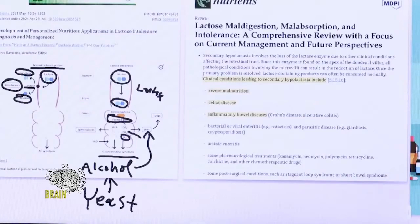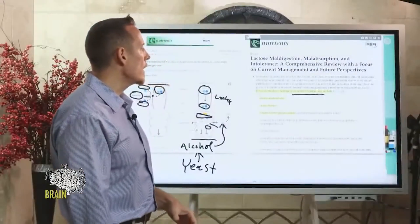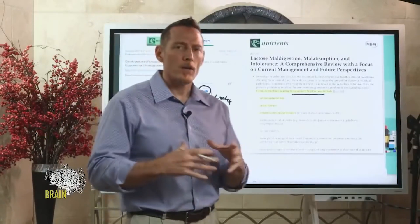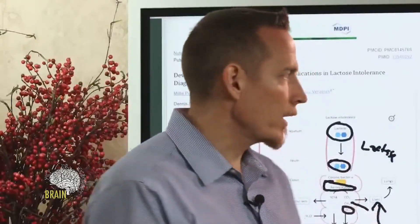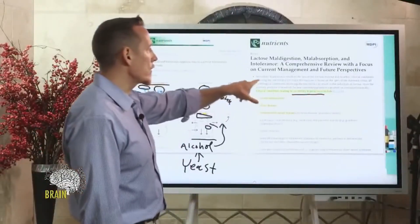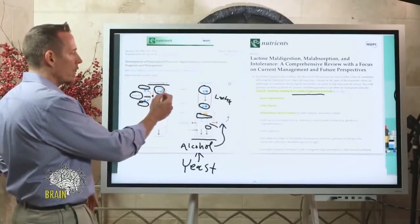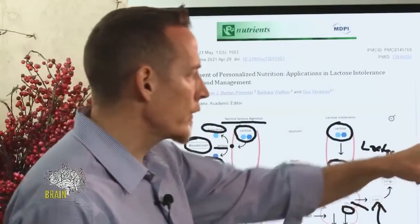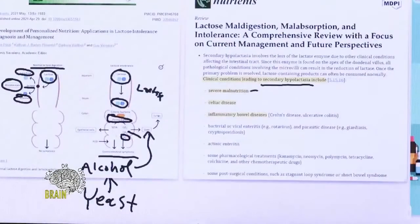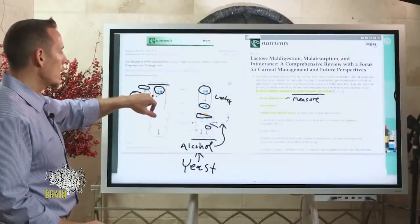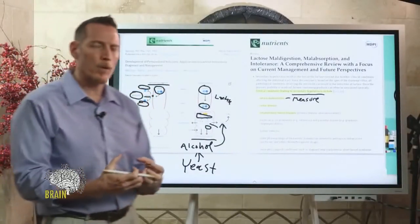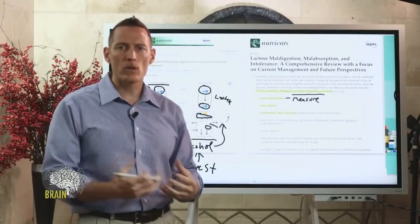Looking at the diagram's section on lactose maldigestion, malabsorption, and intolerance, we see clinical conditions leading to secondary hypolactasia — an inability to produce adequate lactase. There's a genetic version of lactose intolerance found much earlier in life, but there are also secondary causes that can develop later. One of them is severe malnutrition: certain nutrients, especially zinc, are necessary to produce lactase. Lactase is made in the brush border of the small intestine, so anything that damages that brush border or depletes the nutrients needed to build the enzyme can reduce lactase production.